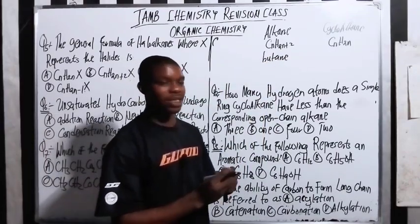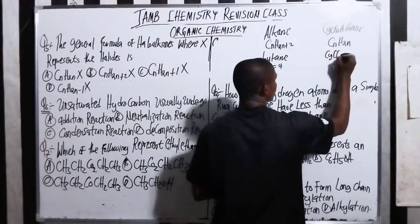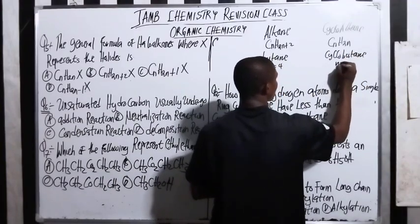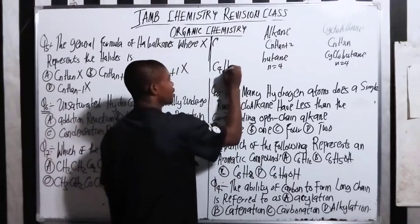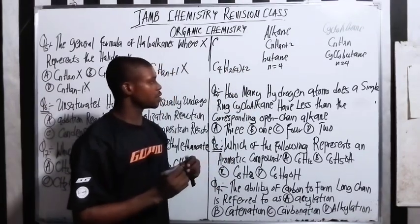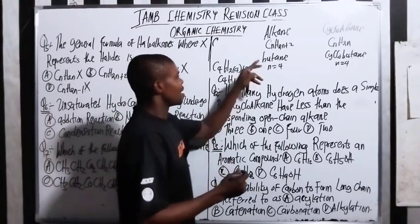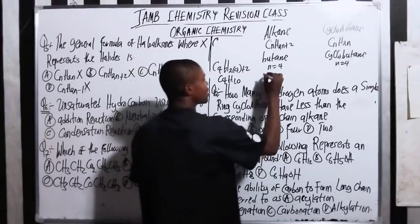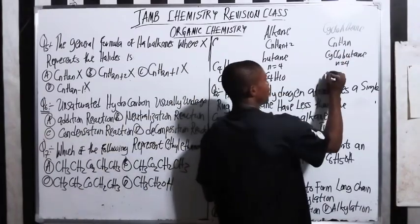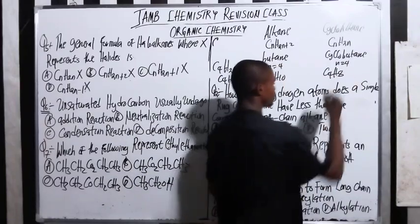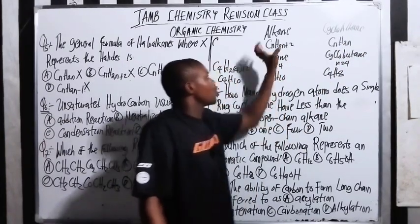Let's take butane — n equals 4. Then let's take cyclobutane, where n also equals 4. For butane, substituting n=4 into CnH2n+2 gives C4H(2×4+2) = C4H10. For cyclobutane, substituting n=4 into CnH2n gives C4H(2×4) = C4H8. So cycloalkanes have two fewer hydrogen atoms than the corresponding alkanes.